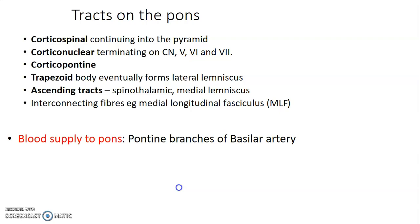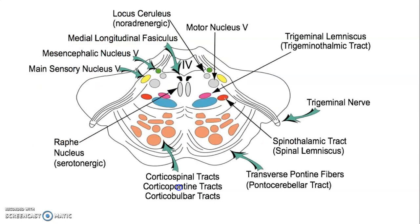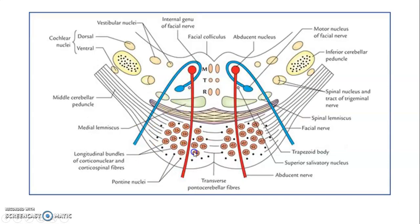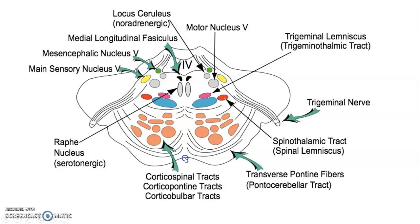We also have interconnecting fibers like the medial longitudinal fasciculus passing through the pons. The pons mainly receives its blood supply from the basilar artery, which is formed by the union of the right and left vertebral arteries. Pause at this picture to identify the nuclei and tracts of the pons. The fourth ventricle is posterior to the pons and medulla. Anteriorly, the basilar groove lodges the basilar artery. The basal pons contains the corticospinal tracts.